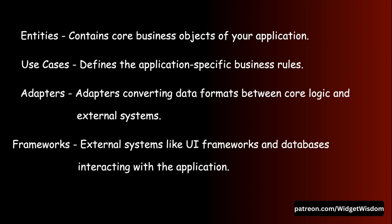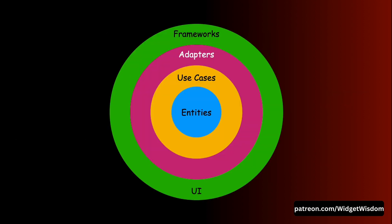Adapters convert data to the format most convenient for external agencies like databases or the web. Then we have the framework layer — the outermost layer containing details such as UI frameworks, databases, and other external systems. This layer interacts with the outer world but should not directly influence the inner circles. The dependencies point inwards; inner layers know nothing about outer layers, protecting core business logic and making your application more stable and testable.